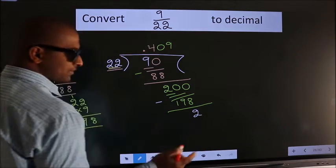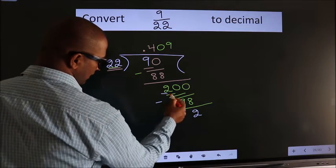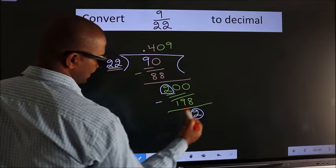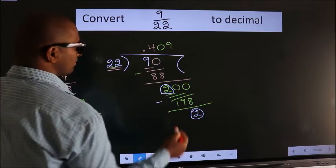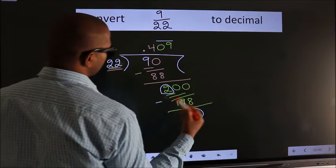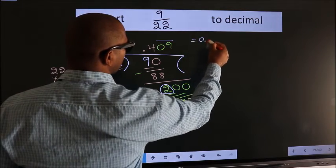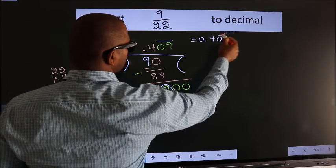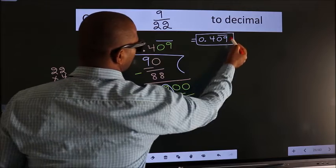Now see, here we got 2, we got 2 again. That means we get a bar on these 2 numbers. Therefore, our answer is 0.409 with a bar on these 2 numbers. This is our answer.